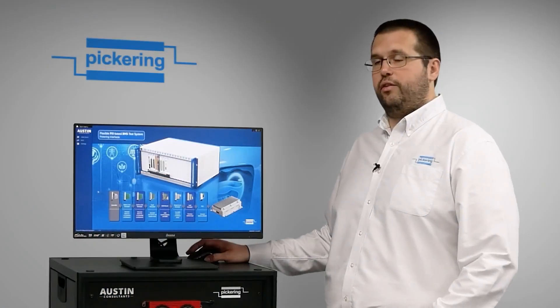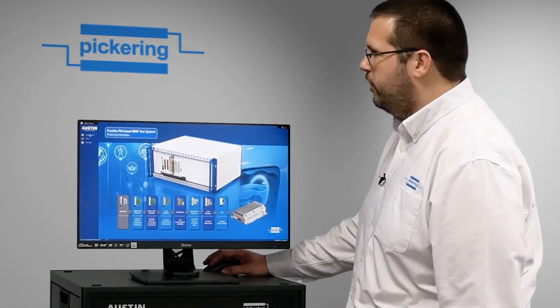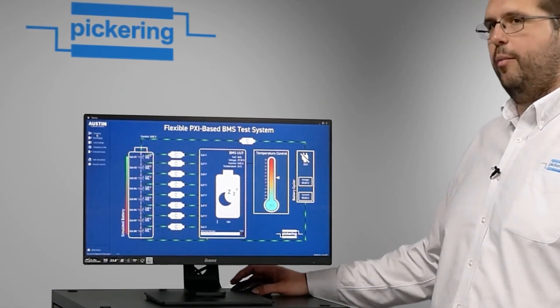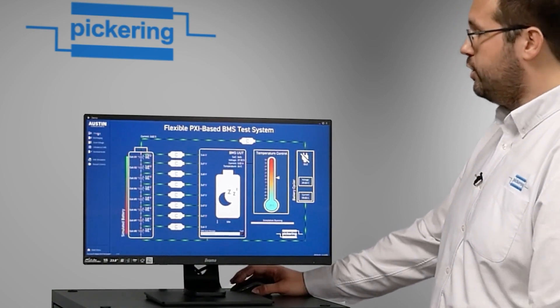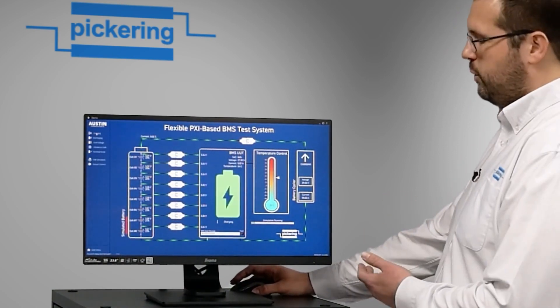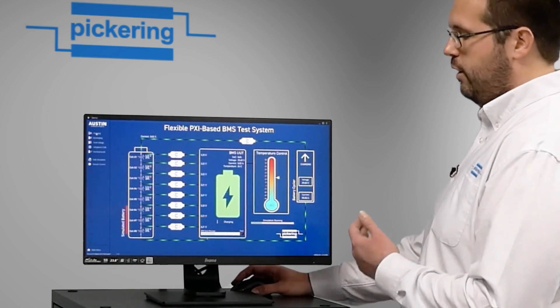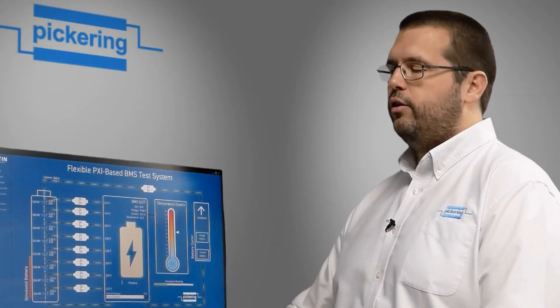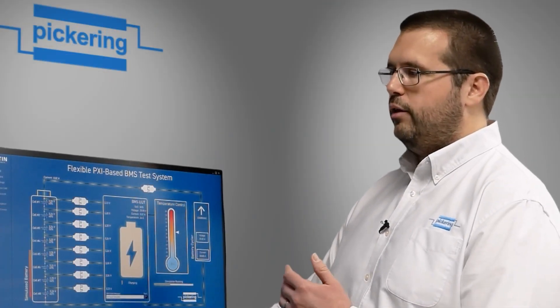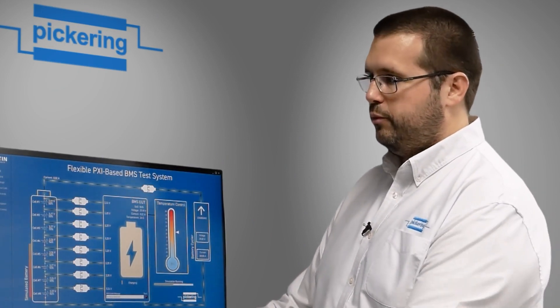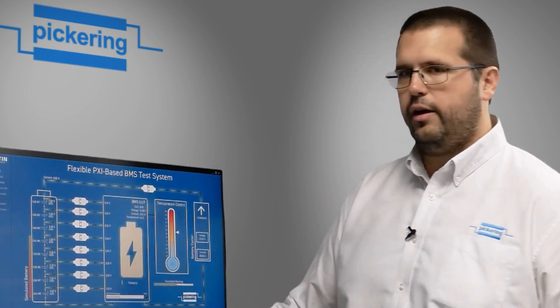You can see in this simulation we encompass the different elements of testing a BMS. For example, here we are showing a charging circuit. In this situation we have a PXI power supply which is connected through the BMS system and that controls the power flow into our cell simulation as shown here on the left.